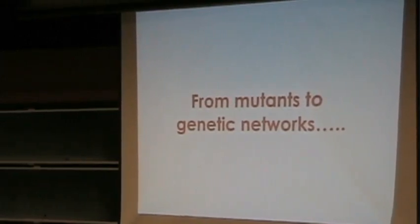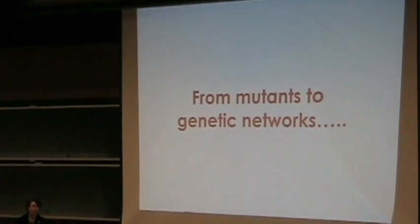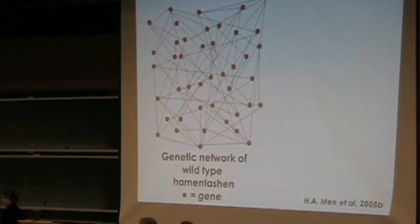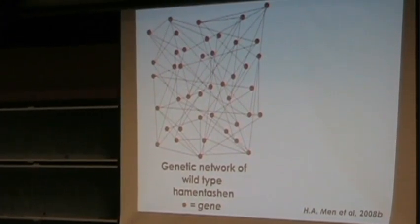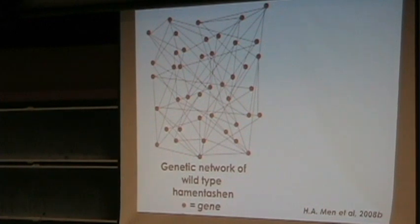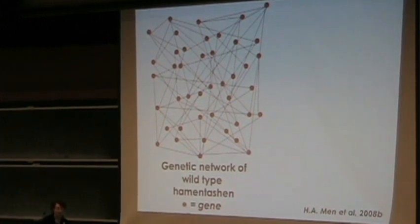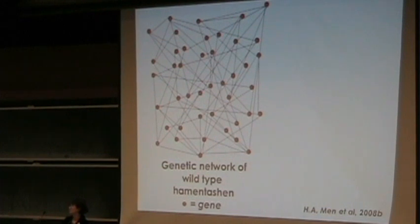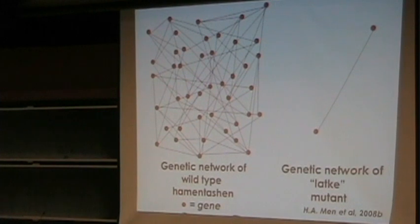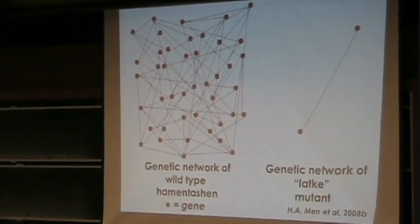So from mutants to genes — one easy step. As you know, the genes were all isolated corresponding to the various mutants, and they were put together in a genetic network. Here's the genetic network — you can see it's extremely complex, with multiple connections between all genes, reflecting the complexity of the adult Khamintoshan. And I want to show you the genetic network for one of those Communances isolated — simple, boring, irrelevant.